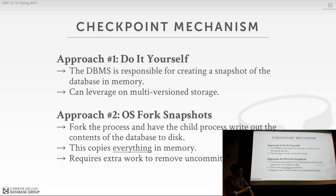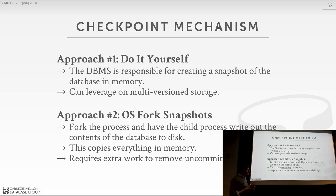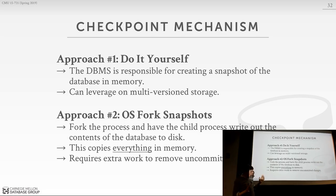The second design decision: how do we actually create the checkpoint? The most common approach is to do it yourself inside the database system — the most naive scheme would be a sequential scan on a table, taking the output and writing it to disk. You can be more clever and only look at delta records if you're doing delta versioning. The alternative approach — which as far as I know nobody does anymore — is to fork the process, since the database is entirely in memory, and have the child process write the snapshot to disk.